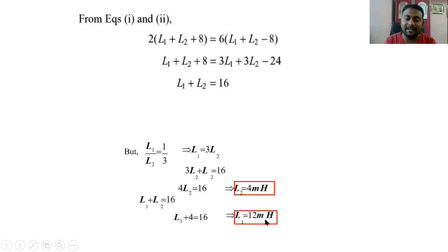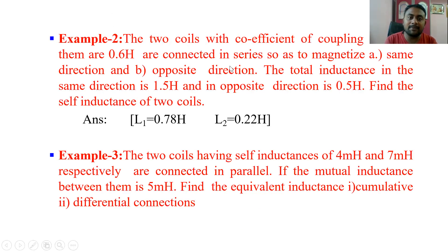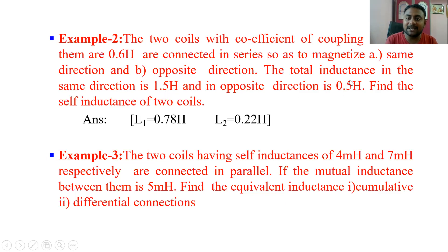Substituting L2 = 4 milli Henry back into L1 + L2 = 16, we get L1 = 12 milli Henry. Hope you understood. Now here is another problem. The given data is: two coils with coefficient of coupling K = 0.6, connected in series. The total inductance in series aiding (same direction), using formula L1 + L2 + 2M, equals 1.5 Henry. In series opposing (opposite direction), L1 + L2 − 2M equals 0.5 Henry.